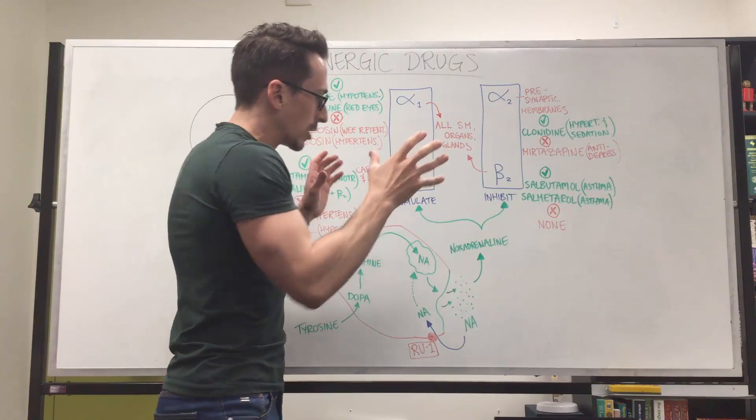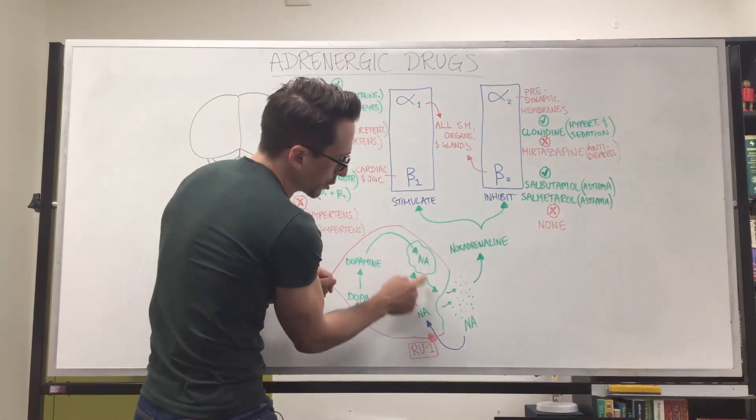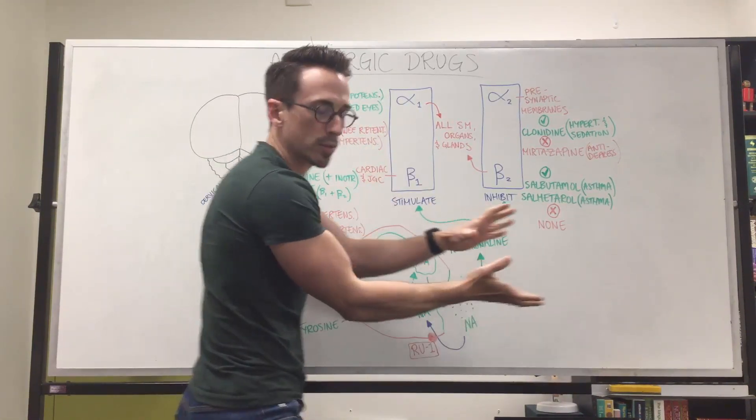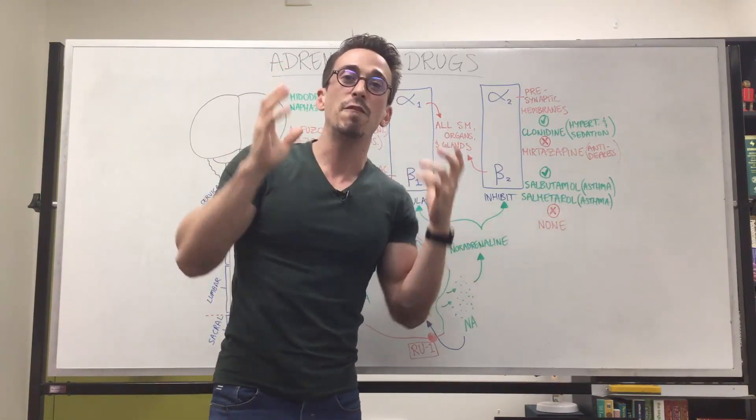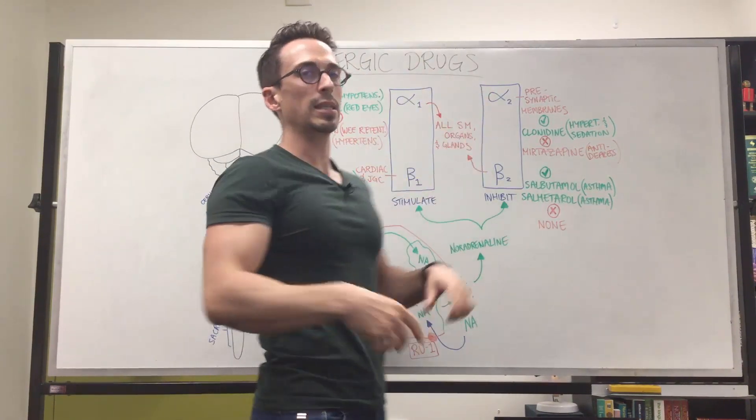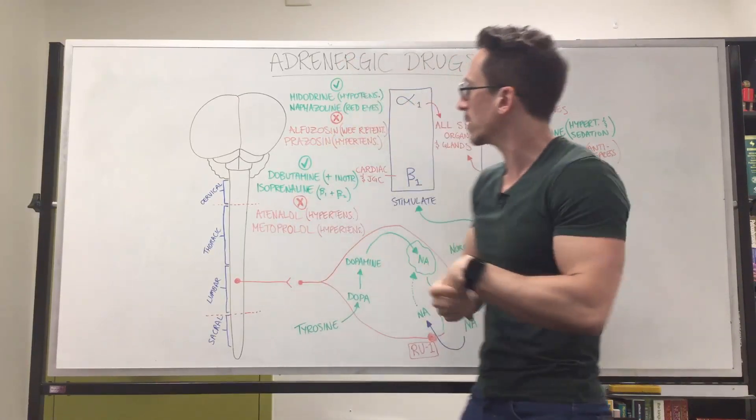You can also have certain drugs that stimulate more noradrenaline to actually be released by these vesicles. It just tells more and more noradrenaline to be released. These are the amphetamines, those party drugs. Now let's look at these particular receptors and some common clinically applicable medications that we use.